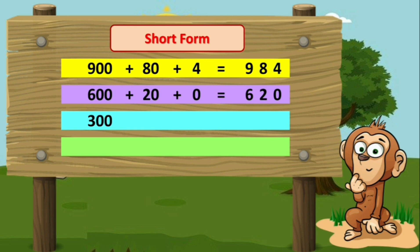Now we have 300 + 70 + 9. What will be the short form of this expanded form, children? We will write three as we have three hundreds, then seven as we have seven tens, then nine. So three, seven, nine — that means three hundred and seventy-nine (379).